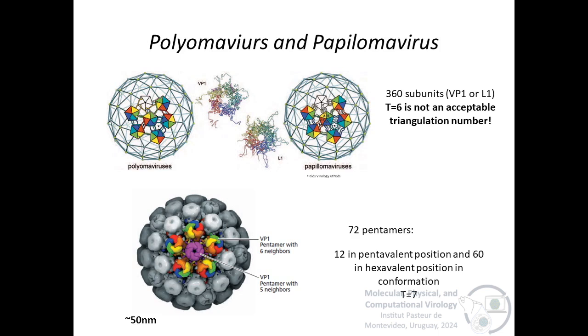As an example of structures that do not follow quasi-equivalence rules, we have the capsid of polyomavirus and papillomavirus that are built with 360 subunits, corresponding to T equals 6, but this triangulation number is excluded by the rules formulated by Caspar and Klug. The structural unit is a pentamer of the major structural protein VP1 for polyomavirus, or L1 for papillomavirus. The capsid is built from 72 such pentamers. 12 structural units occupy the 12 positions of fivefold rotational symmetry in which each is surrounded by 5 neighbors. Each of the remaining 60 pentamers is surrounded by 6 neighbors at a position of sixfold rotational symmetry in the capsid. Consequently, it actually behaves as if it were a T equals 7.